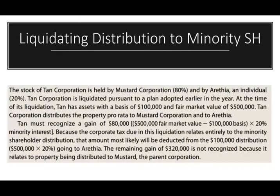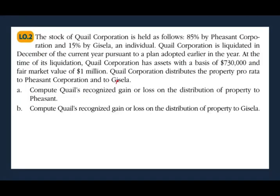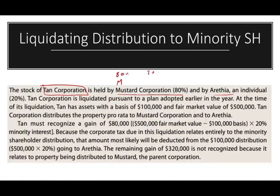Let's take a look at this example. The stock of TAN Corporation is held by M Corporation at 80% and Arethea at 20%. So M Corporation owns 80% and the individual Arethea owns 20%. The corporation is liquidated pursuant to a plan adopted earlier during the year. At the time of its liquidation, the company has assets with a basis of $100,000 and a fair market value of $500,000. TAN Corporation distributes the property on a pro-rata basis — 80% to M and 20% to Arethea. So the realized gain is $400,000.